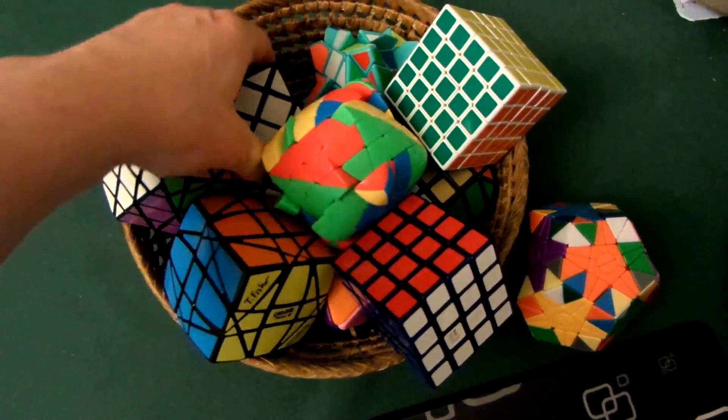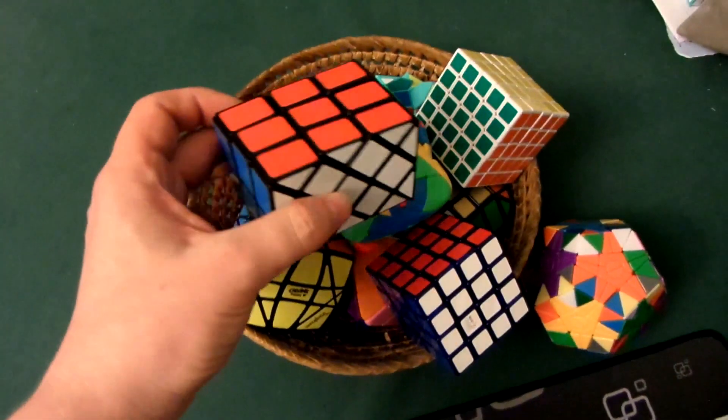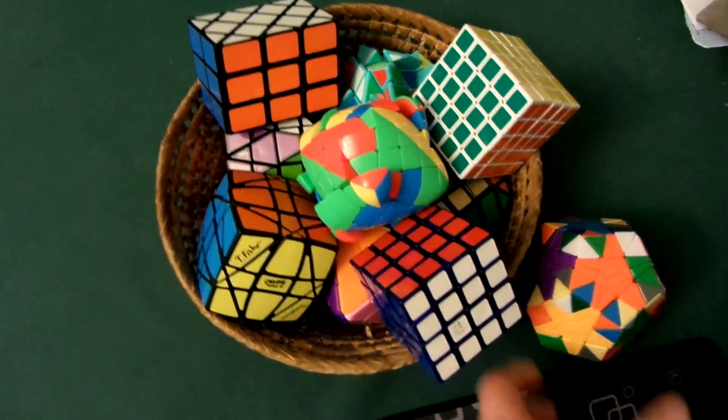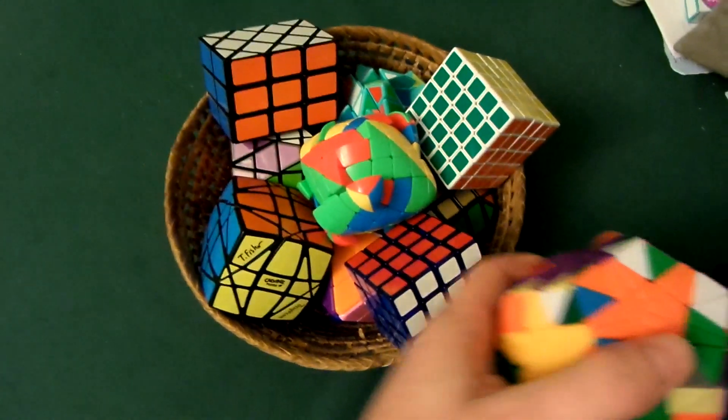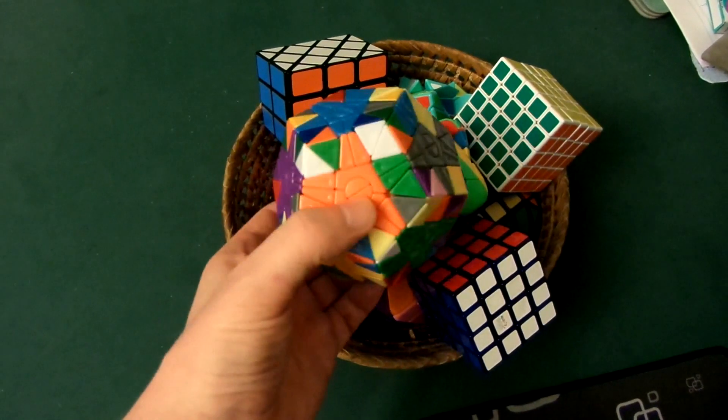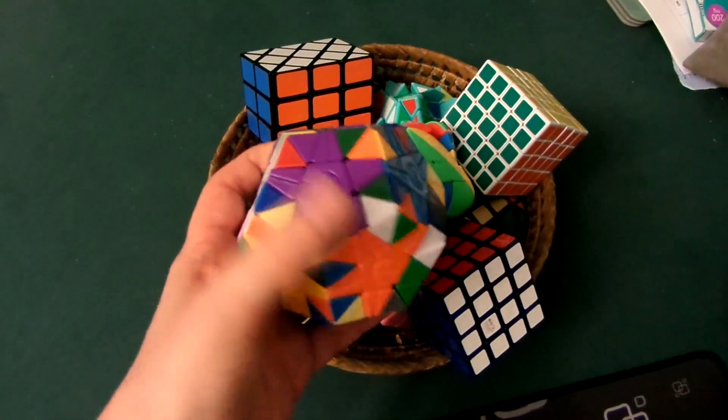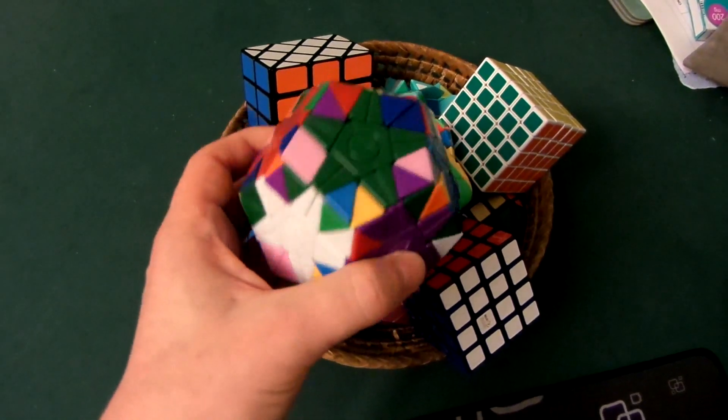Here we have the Dan Sheng Slice Cube, and then lastly we have the Whedon 2x2 Megaminx. Really nice looking puzzle.